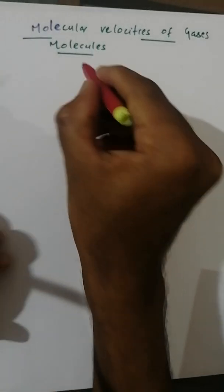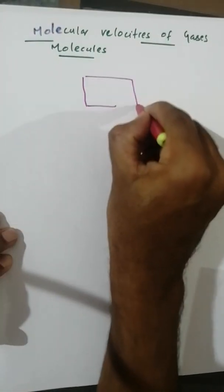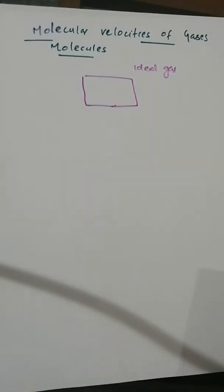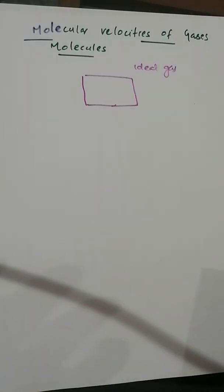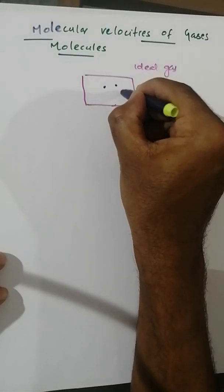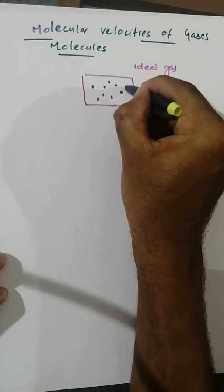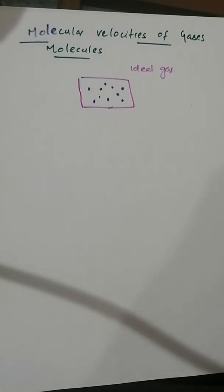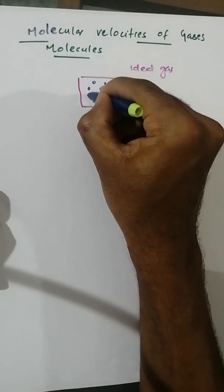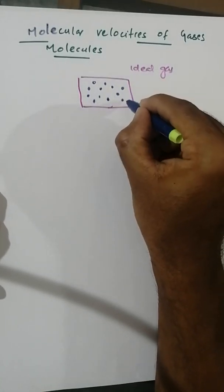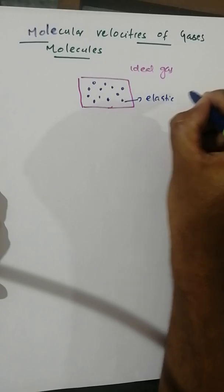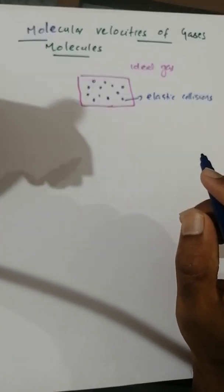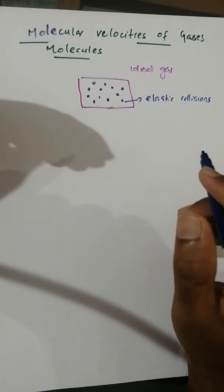As we know, ideal gas molecules are tiny molecules. We have a lot of gas molecules — they are tiny molecules. They collide with each other and with the walls of the container, but their collisions are perfectly elastic collisions.